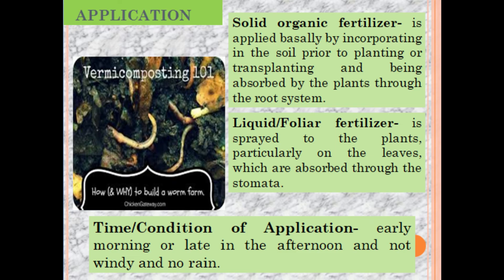Foliar fertilizer is sprayed onto the plants, particularly on the leaves, and absorbed through the stomata. The good timing for application is early in the morning or late in the afternoon. The weather must be good — no rain and not windy.